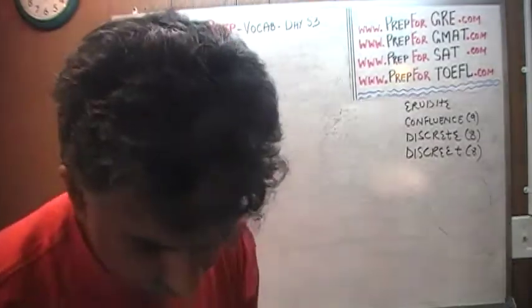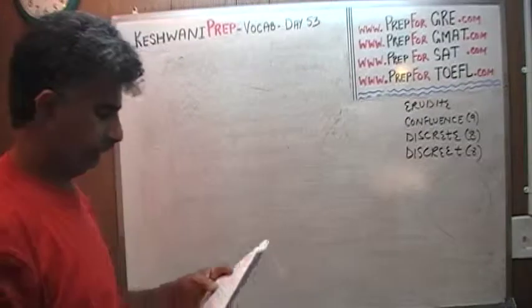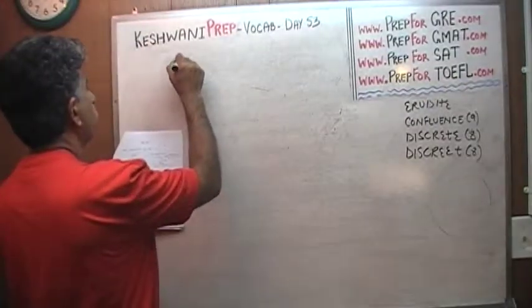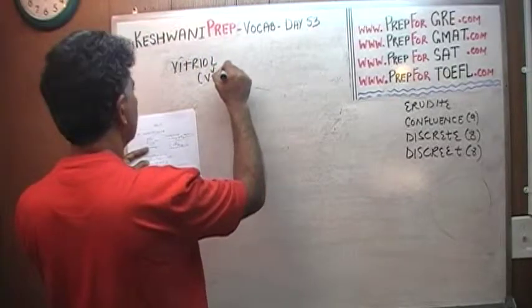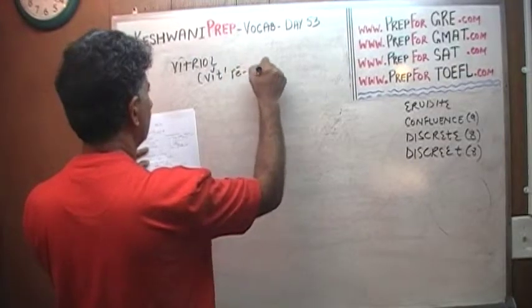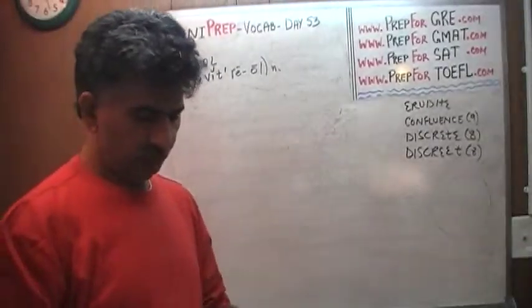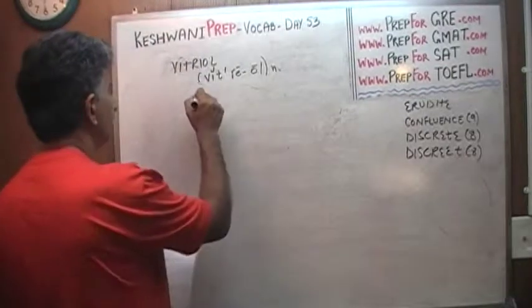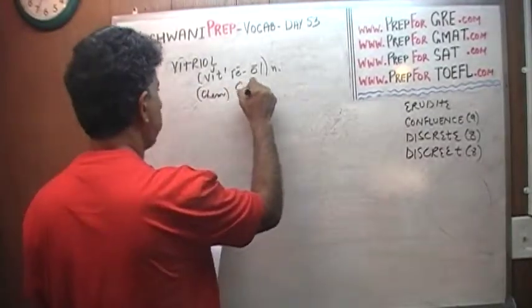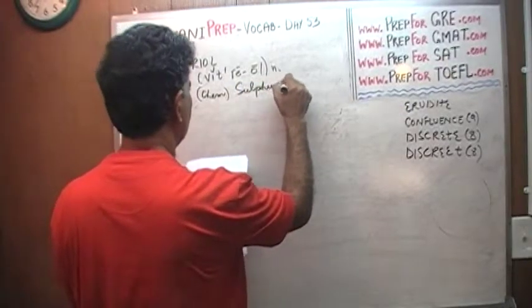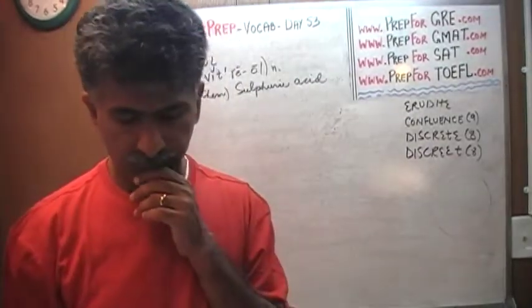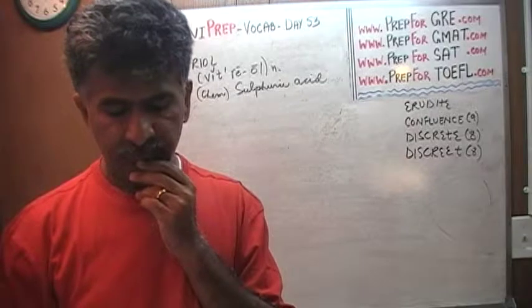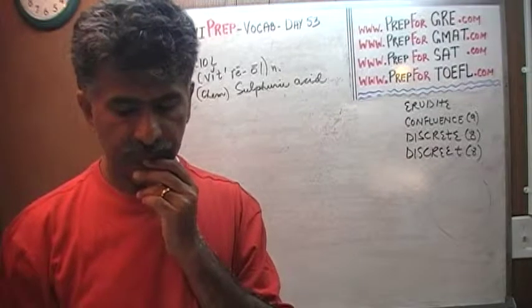All the words today have to do with being nasty. The next word is vitriol — V-I-T-R-I-O-L. What does vitriol mean? Well, literally in chemistry, vitriol means sulfuric acid. Sulfuric acid is vitriol — that's what it's called. And something that burns like sulfuric acid is called vitriolic.